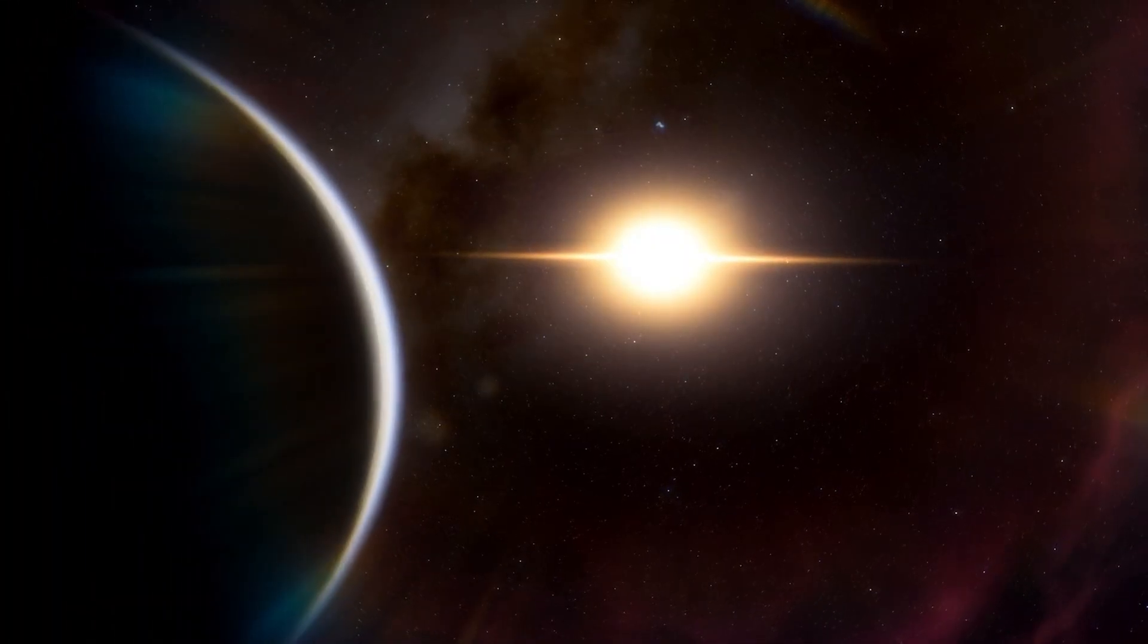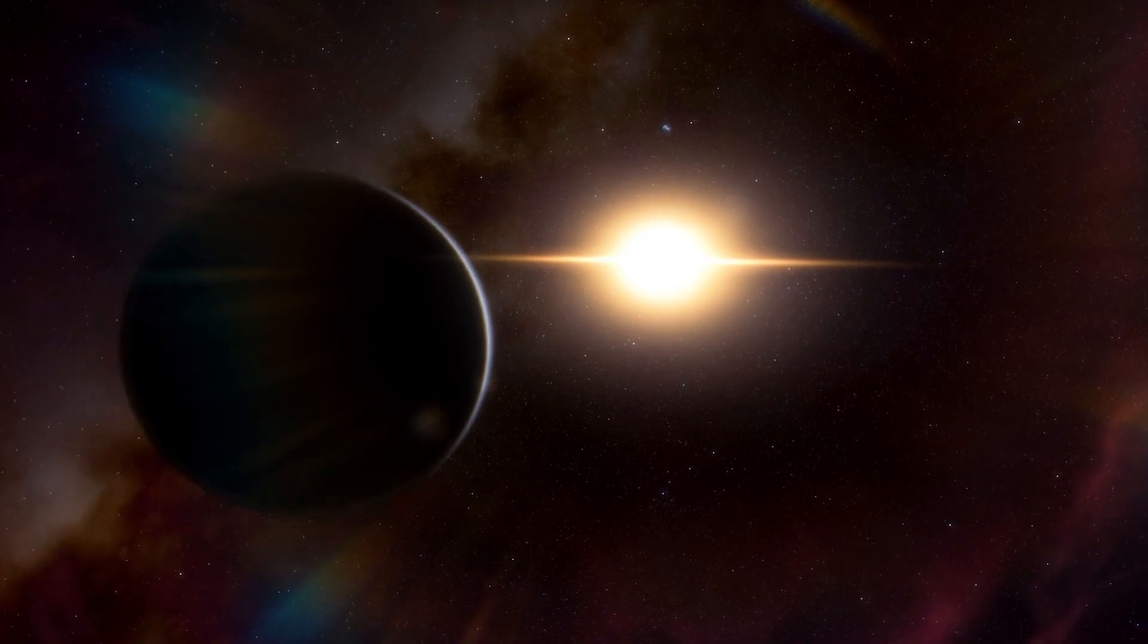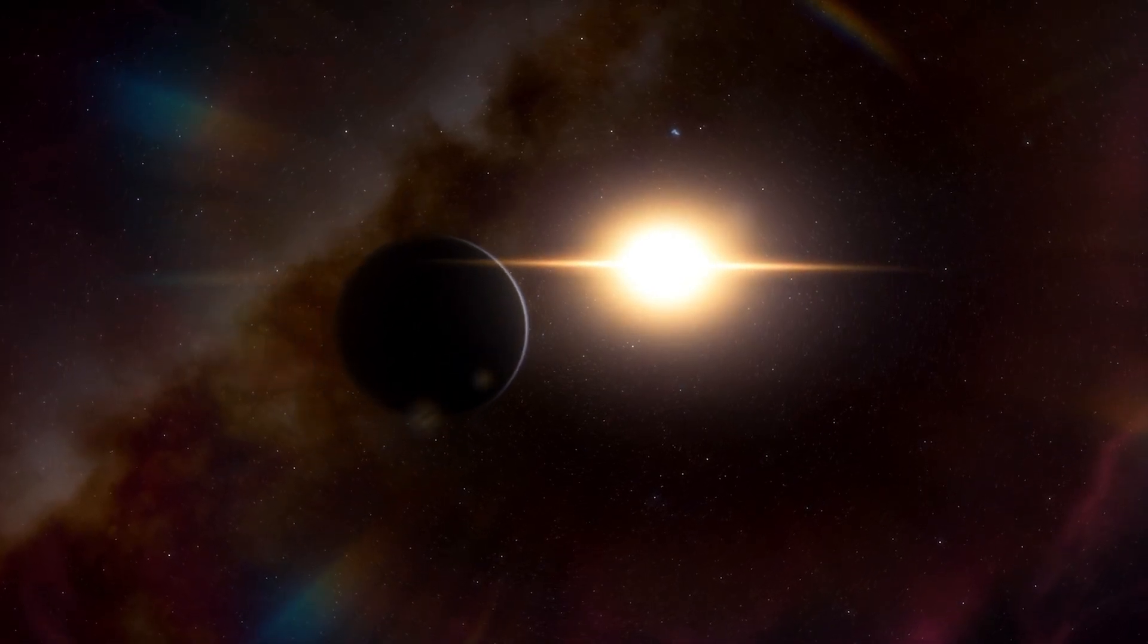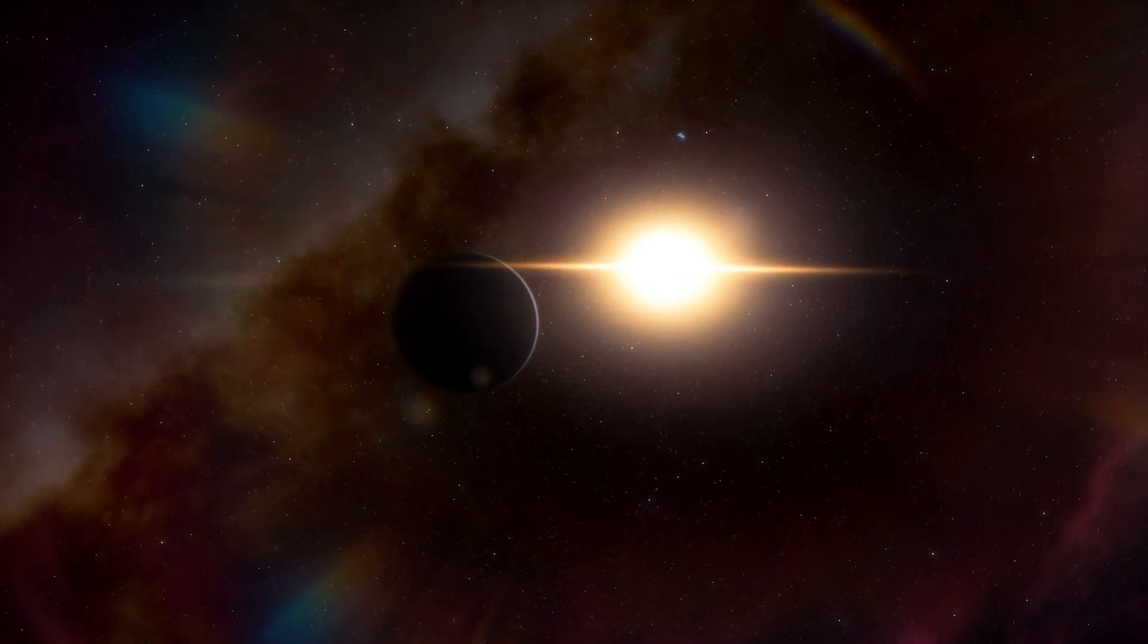A triple star system that twinkles enticingly in the southern night sky. This cosmic trio consists of two sun-like stars, Alpha Centauri A and B, and a faint red dwarf, Proxima Centauri.